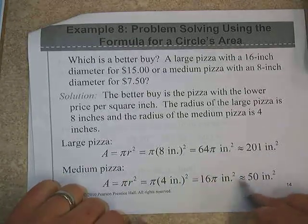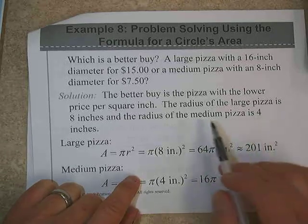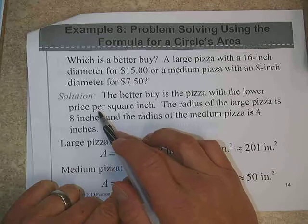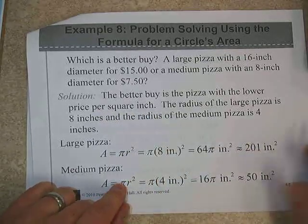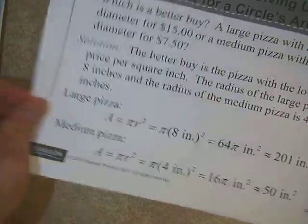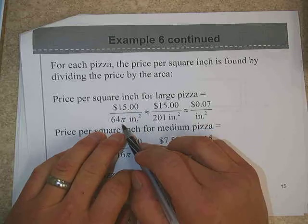And the radius of the large pizza is 8, the medium pizza is 4. So if we find the area of the large pizza, it's about 201 inches squared. The medium pizza, the area is about 50 inches squared. And again, we're looking for the better buy. So we're looking for the lowest price per square inch, price divided by square inches.